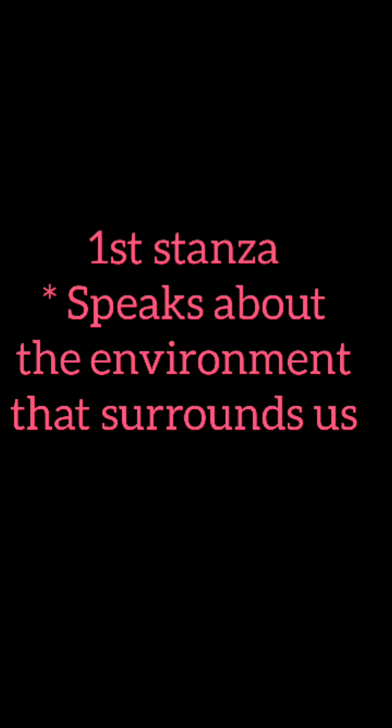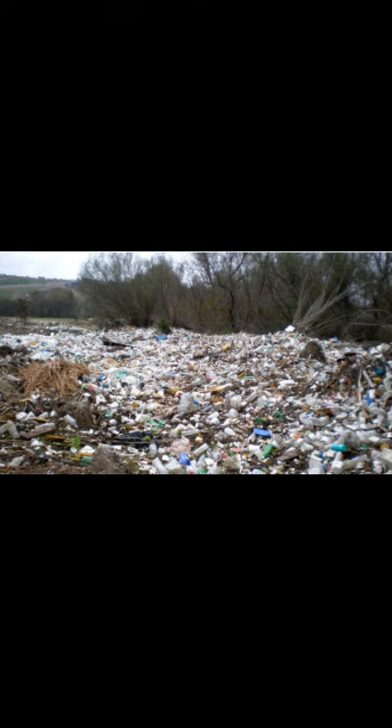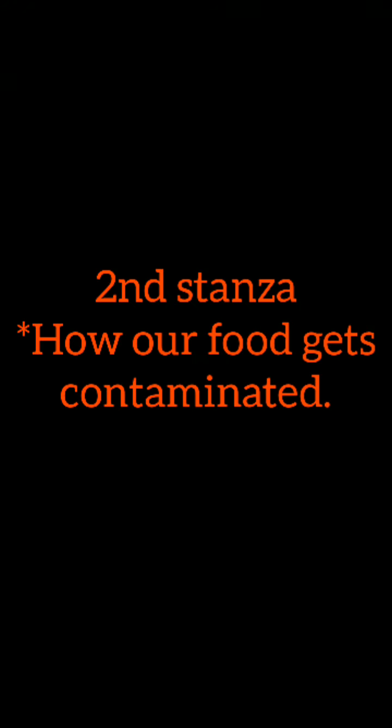In the first stanza of the poem, the poet speaks about the environment that surrounds us. Broken bottles and charred pieces of glass are scattered, and bundled newspapers are tossed on the grass. 'Pouring of concrete and tearing out trees' means trees are cut down and concrete buildings have grown in their place — people have constructed buildings by cutting down trees. This is the environment that surrounds us, says the poet.